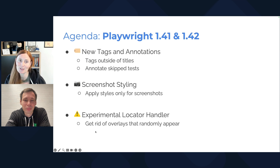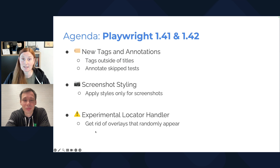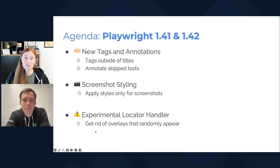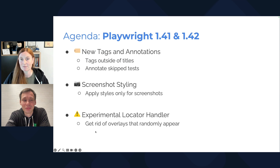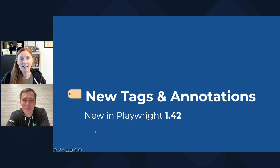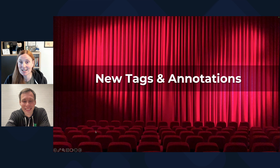So let's jump into the agenda. We have for you today: new tags and annotations — tags outside of titles, annotate skipped tests. Then we have screenshot styling where you can apply styles only for screenshots, and some experimental locator handlers where you can get rid of overlays that randomly appear.